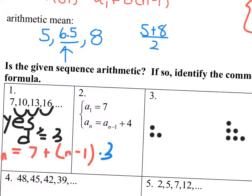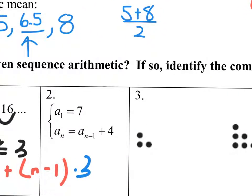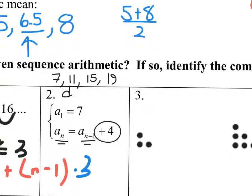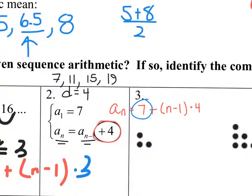Problem 2 is written in recursive form. The first term is 7, and to get each next term you add 4: 7 plus 4 is 11, 11 plus 4 is 15, then add 4 again. So it's arithmetic with common difference 4. The explicit formula is a sub n equals 7 plus (n minus 1) times 4 — just plug in your first term and common difference. It's similar to plugging slope and y-intercept into y equals mx plus b.